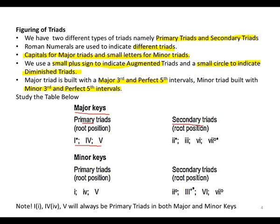In secondary triads for major keys: 2 is a minor triad, 3 is a minor triad, 6 is a minor triad, and 7 is a diminished triad. In minor keys, primary triads are still 1, 4, and 5 — but the difference is that 1 and 4 are minor, while 5 is major.